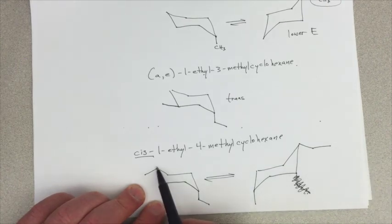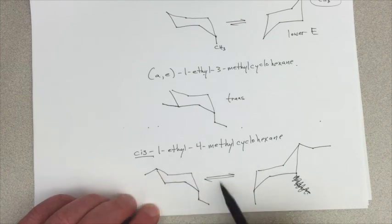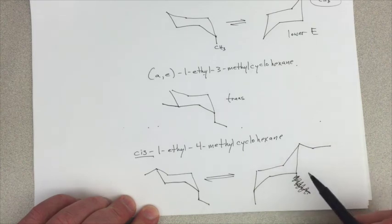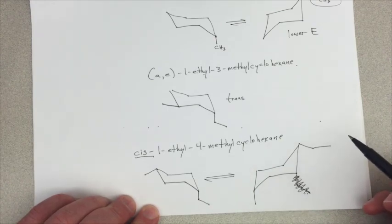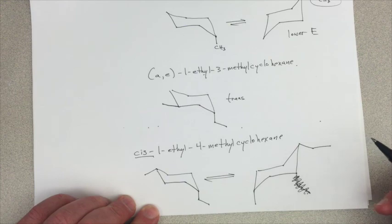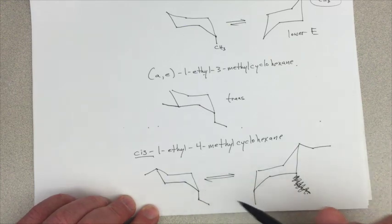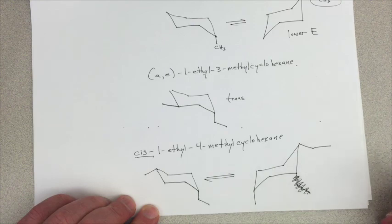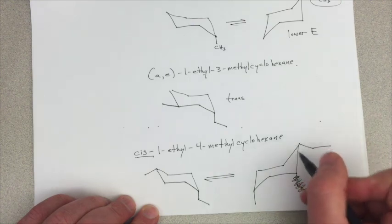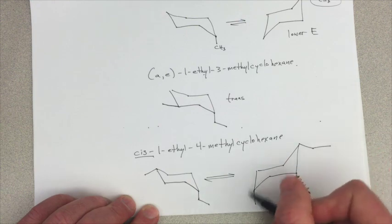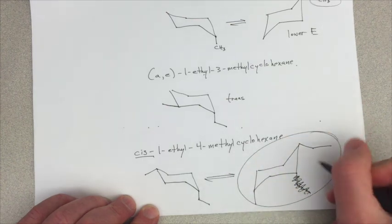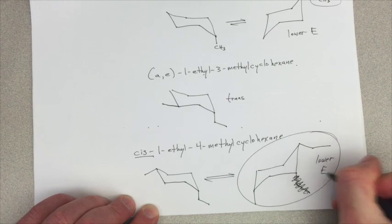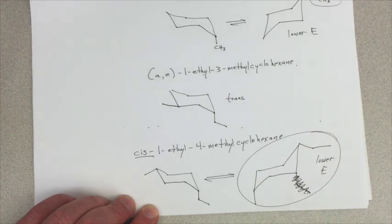Would we rather have the methyl group in equatorial position, as it is in this conformation, or would we rather have the ethyl group in the equatorial position, like it is in this molecule? And you've probably guessed it, right? If we're trying to reduce steric hindrance by putting bulky substituents in equatorial position, then the ethyl group, the bigger substituent, which has more potential for steric hindrance, we get more of a benefit from putting it in the equatorial position and less of a cost for putting a smaller methyl group in the axial. So we would choose this conformation as the lower energy chair conformation for this disubstituted cyclohexane.